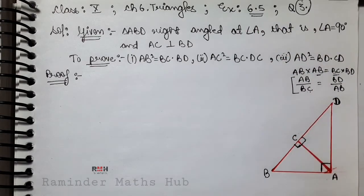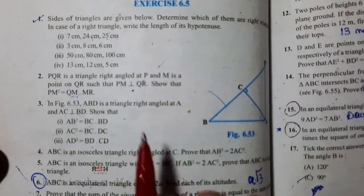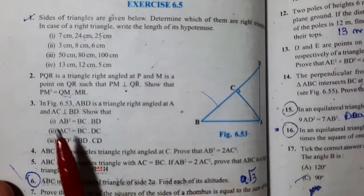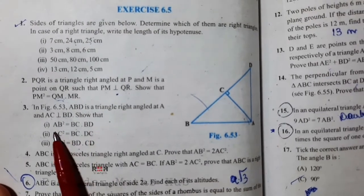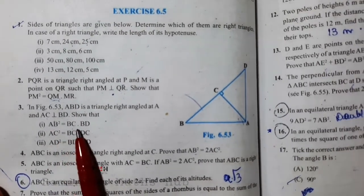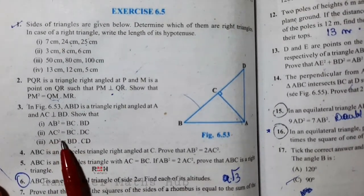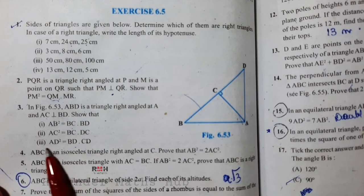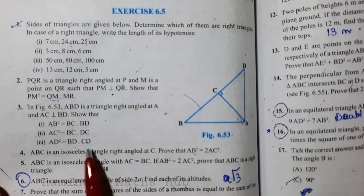Question 3 is: In figure 6.53, ABD is a triangle right angled at A and AC is perpendicular to BD. Show that AB² = BC·BD, AC² = BC·DC, and AD² = BD·CD.